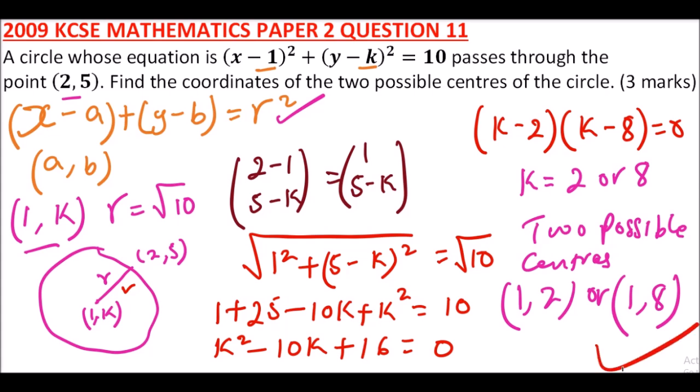So I hope you have followed how to work out that. The important thing here is to be able to relate the equation of the circle, and then be able to deduce and work out the magnitude of this vector, and you equate it to the square root of 10 which is the radius of that circle.